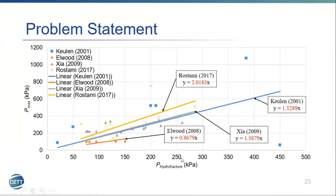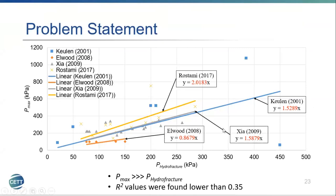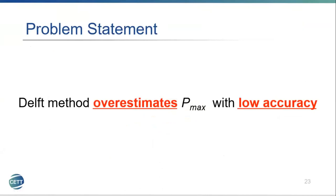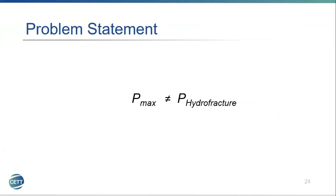This is a representation of estimations done by other researchers. The Y-axis represents the Pmax estimated with the DELF method, and the X-axis represents the Phydrofracture measurements. The Pmax is much greater than the Phydrofracture, as these coefficients are mostly greater than one. The R-squared for these correlations was found lower than 0.35, which is significantly low. It can be concluded that the DELF method overestimates Pmax with low accuracy.